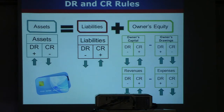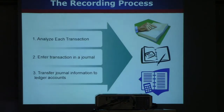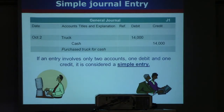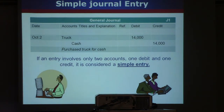After this small review, I'm going to move to journal entries. We did this journal entry yesterday, where the person purchased a truck for $14,000. We debited truck for $14,000 and credited cash for $14,000.